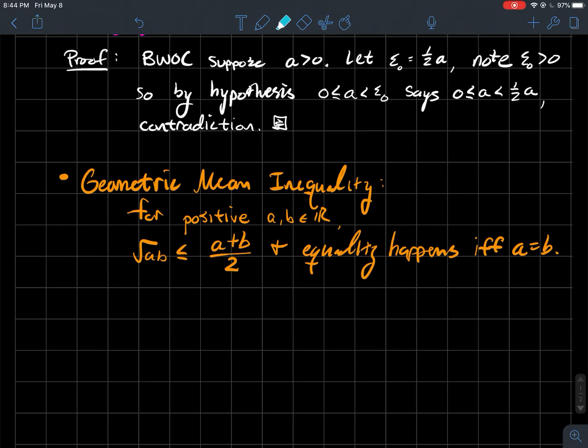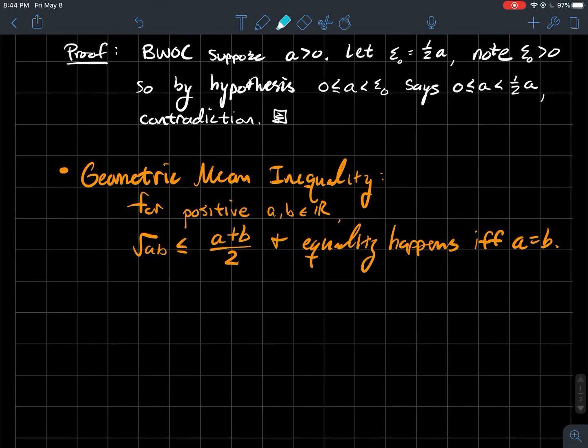Another key property of the reals that we might run into is the geometric mean inequality. So if you've got two positive numbers, A and B, positive reals, then the left side, square root of A times B is the geometric mean. And that's always smaller than the arithmetic mean, which is just A plus B divided by two. And the only time that this is an actual equality is when A and B are the same number. So how would you prove this thing?